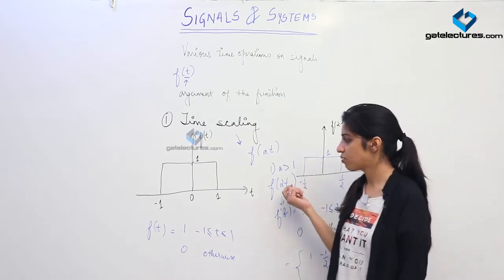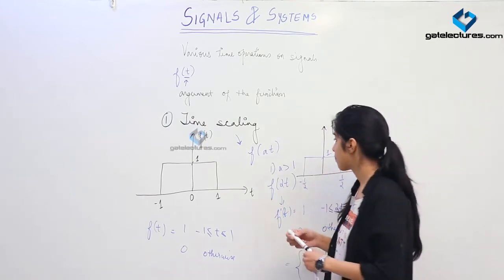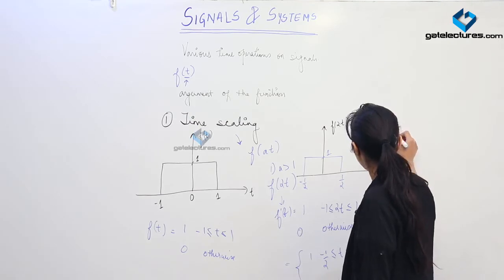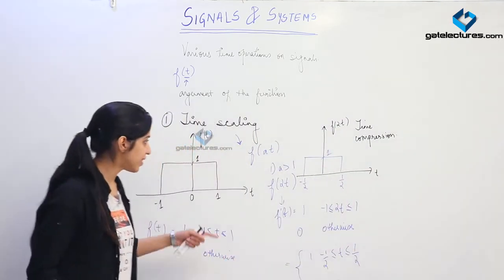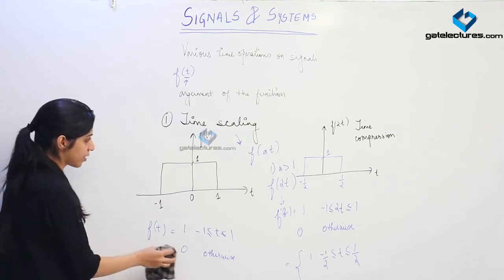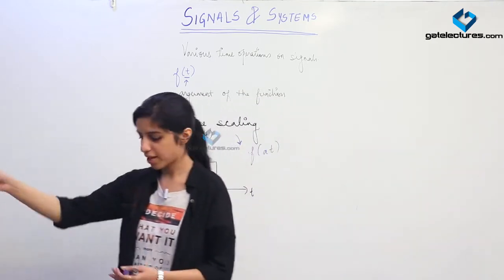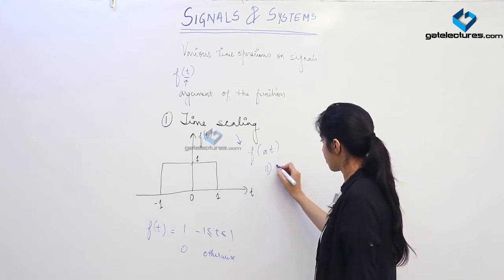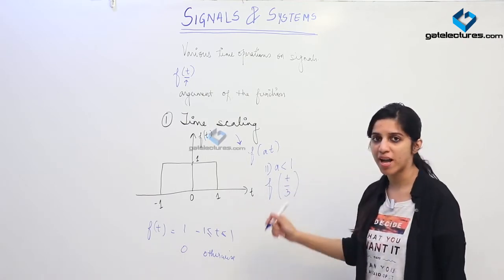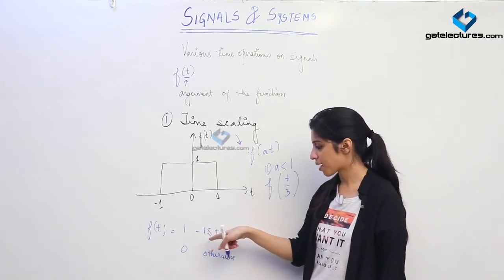Whenever you multiply the argument with any constant greater than 1, the function is going to compress in time — this is time compression. Similarly, we can have time expansion when the constant a is any value less than 1. Suppose I have f(t/3) — then we are going to have expansion of the signal in the time domain.